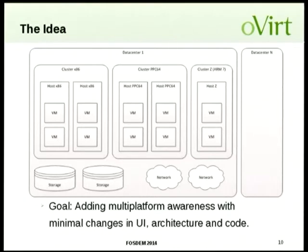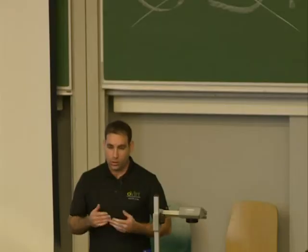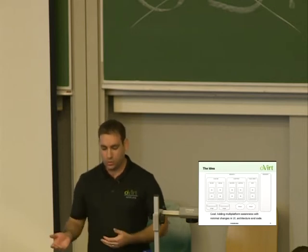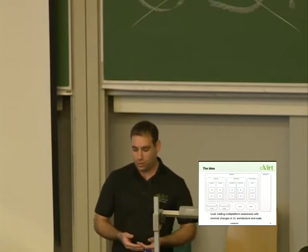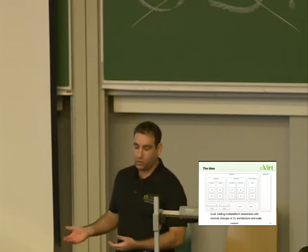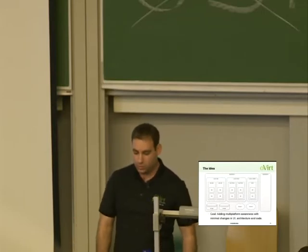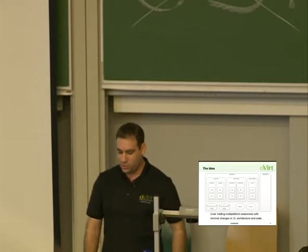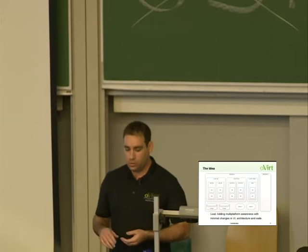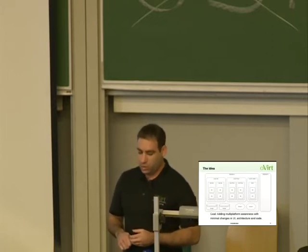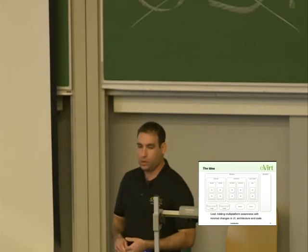So what was the idea? If you remember, there are multiple data centers and each data center has clusters. What we wanted to achieve is that we could have an x86 cluster as today, and also have clusters from other platforms like a PPC64 cluster — and in the future, anything that supports KVM. ARM is a question mark. The goal was adding this support with minimal changes to the architecture inside the engine and the UI, reusing existing infrastructure.